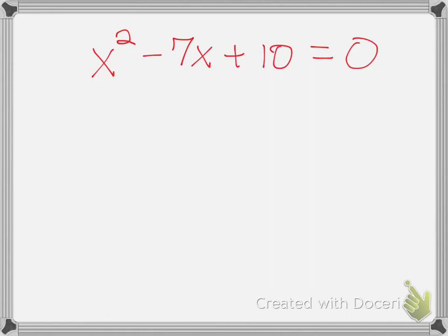If it is an imaginary one like so, the shortcut says all you have to do is figure out what multiplies to give you the last number and adds to equal the middle number.